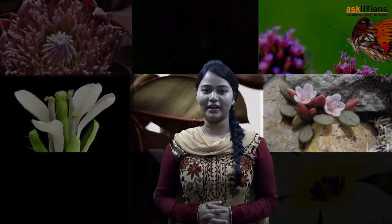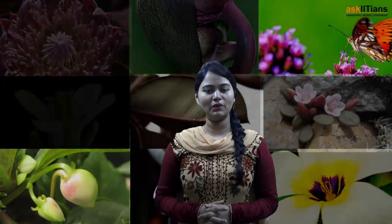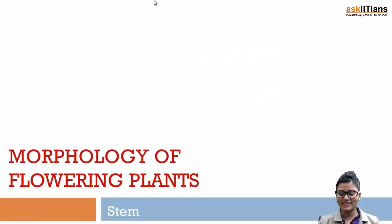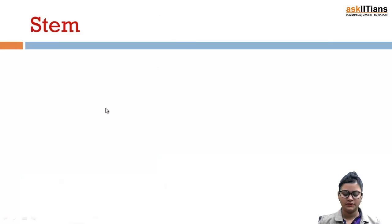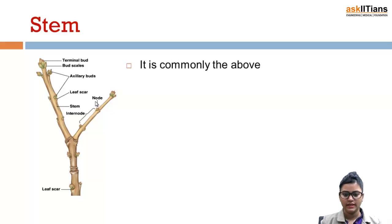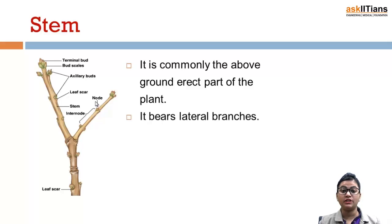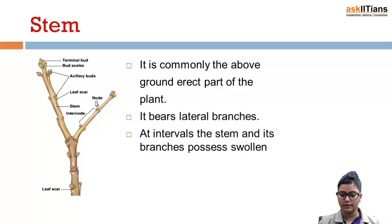Welcome to the fourth part of Morphology of Flowering Plants. In this part we will be discussing about stem. The stem is commonly the above-ground, erect part of the plant. It bears lateral branches at intervals.